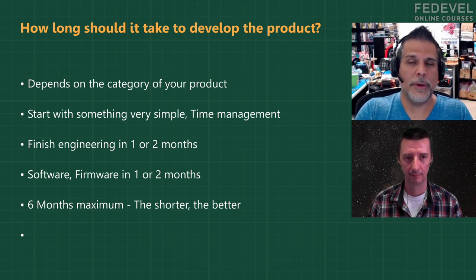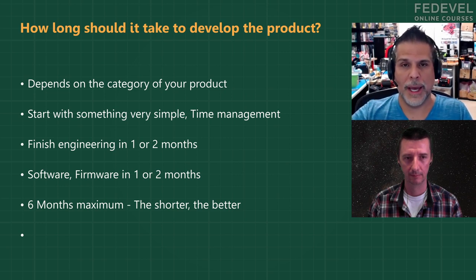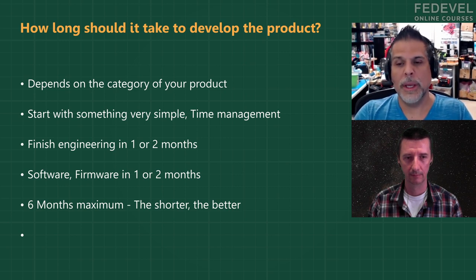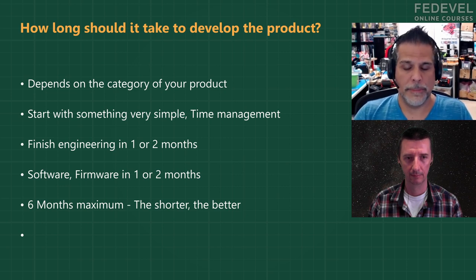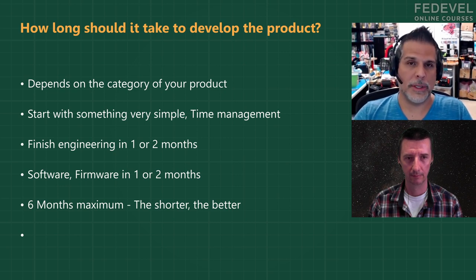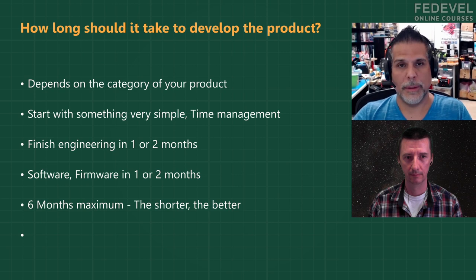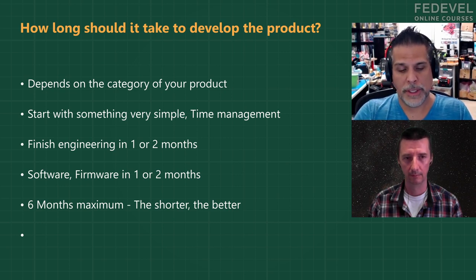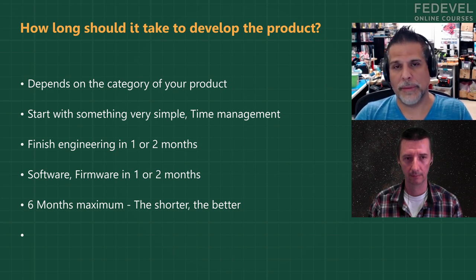The problem is life always happens. People don't add in life — anything can happen. You can get sick, you can lose your job. Those things distract you, so the shorter you can go, the better. Ideally, if you can come up with a cool product idea and in a long weekend design it, then start prototyping the next week — those are the best projects to start with. You put in a small amount of time and you're going to get a big return on investment.